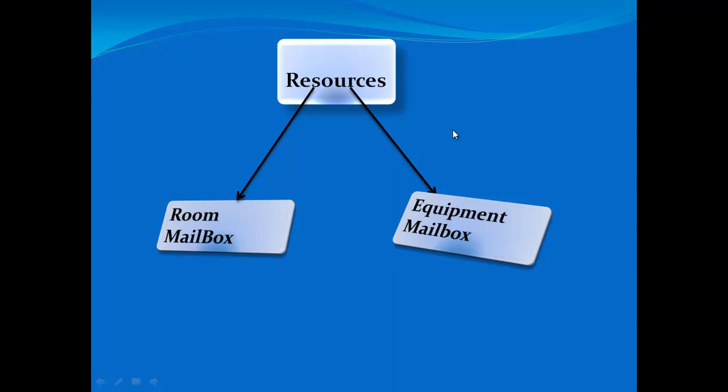Our next recipient type is resources, with subcategories: room mailbox and equipment mailbox. A room mailbox is a resource mailbox assigned to a physical location such as a computer room, conference room, or training room. Users can reserve these rooms by including the room mailbox in their meeting requests. The mailbox then decides whether to accept or decline the invitation — accepted means the room is available, denied means someone else is already using it.